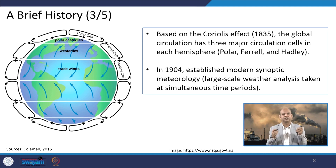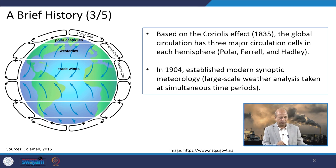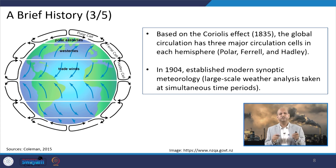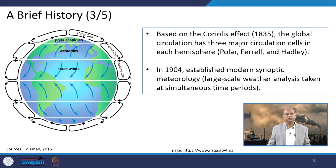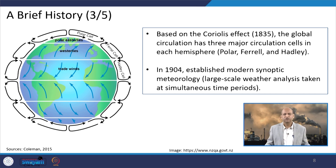That was a very simplistic model; later, three circulation cells were hypothesized and proved: the Hadley cell, the Ferrel cell, and the polar cell. These really influence the circular motion of atmospheric gases and winds, and also determine pollution dispersion as well as the transportation of heat and moisture globally. Based on the Coriolis effect — named after scientist Coriolis — the global circulation has three major circulation cells in each hemisphere: polar, Ferrel, and Hadley.